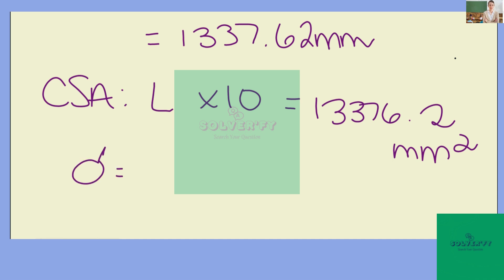This can be calculated by taking P divided by our cross-sectional area. Our P here is 300, so we divide it by our cross-sectional area to get 22.43.